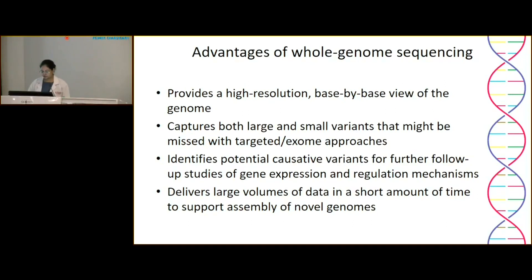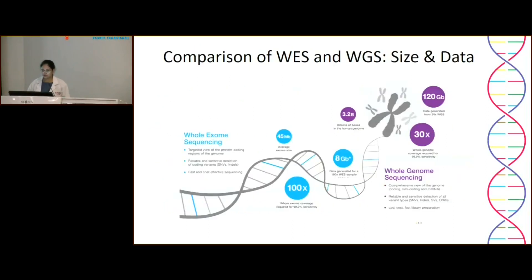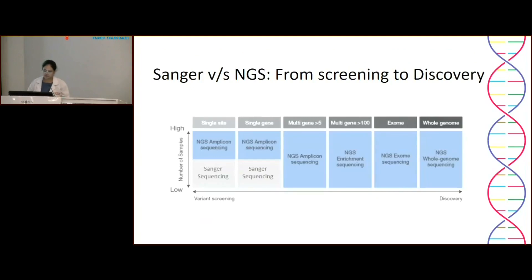To give a comprehensive view of data generated: whole exome sequencing at 100x generates only 8 GB of data, while whole genome sequencing at 30x generates 120 GB. This illustrates the difference in complexity and why it is difficult to find one variant from whole genome data. WGS is therefore used only in very rare scenarios where a genetic component is known but cannot be analyzed by exome sequencing.